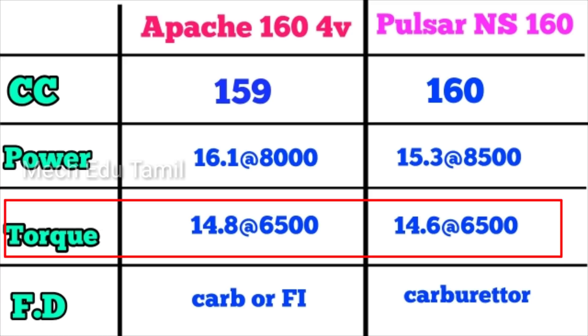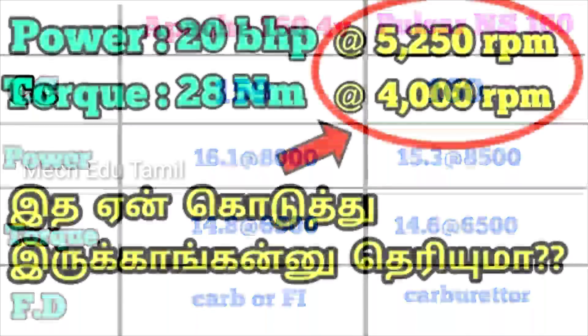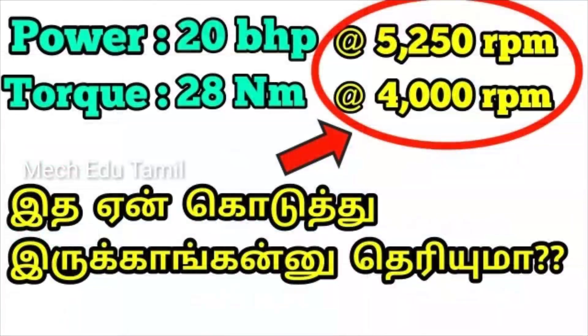For maximum torque, the Apache RTR 164V delivers 14.8 Nm at 6500 RPM, and the NS160 delivers 14.6 Nm also at 6500 RPM. So the torque figures are very similar for both bikes.